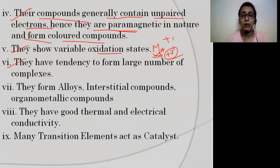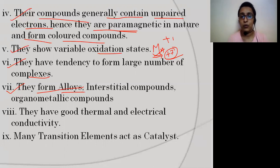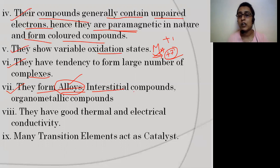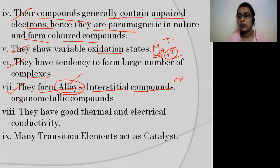They also have a tendency to form a large number of complexes. Another characteristic is that they form alloys — when two metals or non-metals combine together to form a compound known as an alloy. They can also form interstitial compounds, which form when a metal combines with small atoms like carbon, hydrogen, nitrogen, or boron.